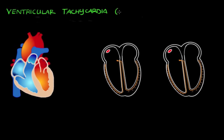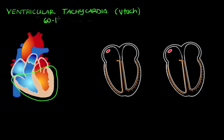Ventricular tachycardia, also known as VTAC, is a rapid heartbeat that arises from cells in the lower chambers of the heart, also known as the ventricles — I'm circling them right here. The heart typically beats between 60 and 100 beats per minute, or BPM.